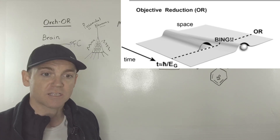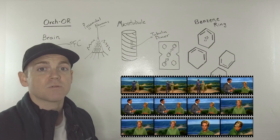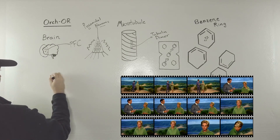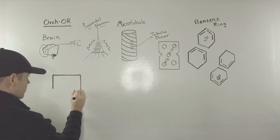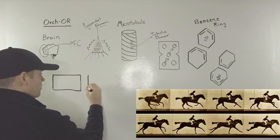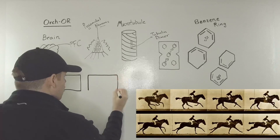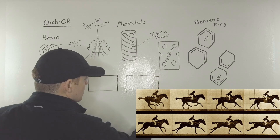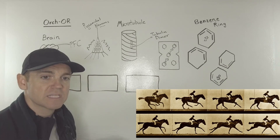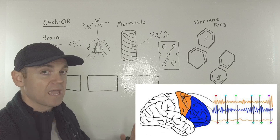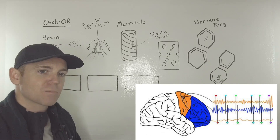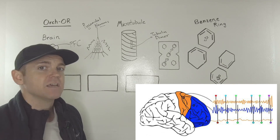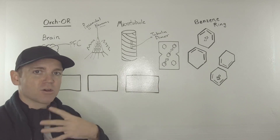This conscious experience is put together like a sequence of frames of a movie. This doesn't have to be a visual representation — this can be a sequence of thoughts, feelings, emotions, pain, pleasure, whatever it is. But it's discrete moments that happen so fast that it seems like a movie playing out in your mind.